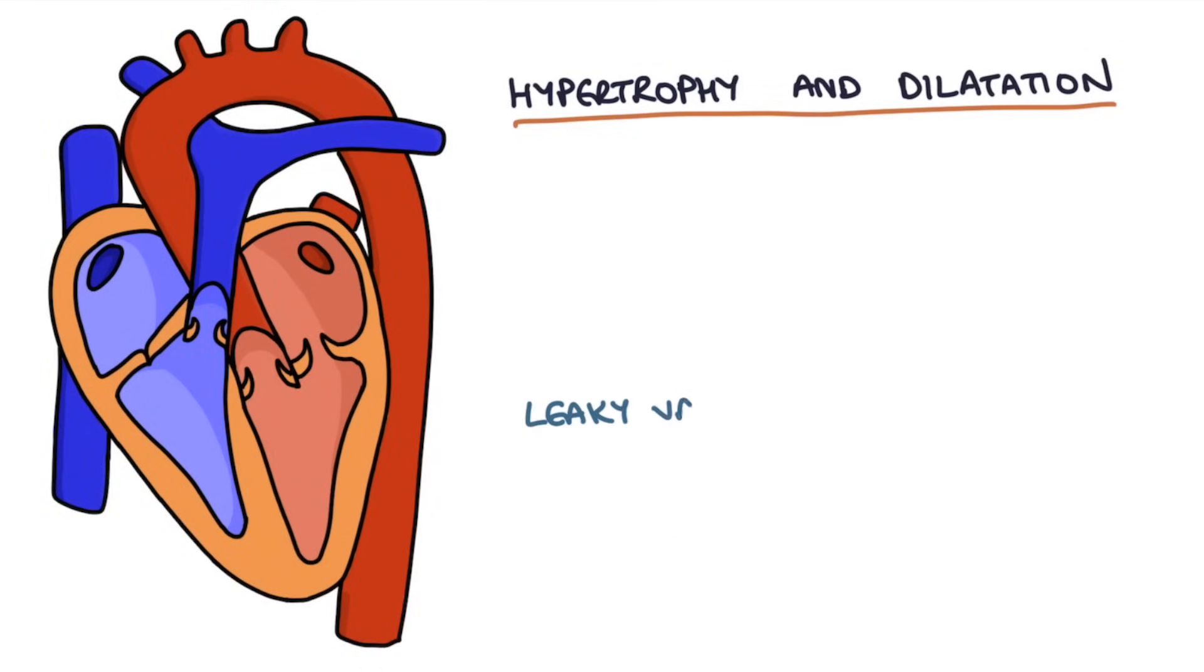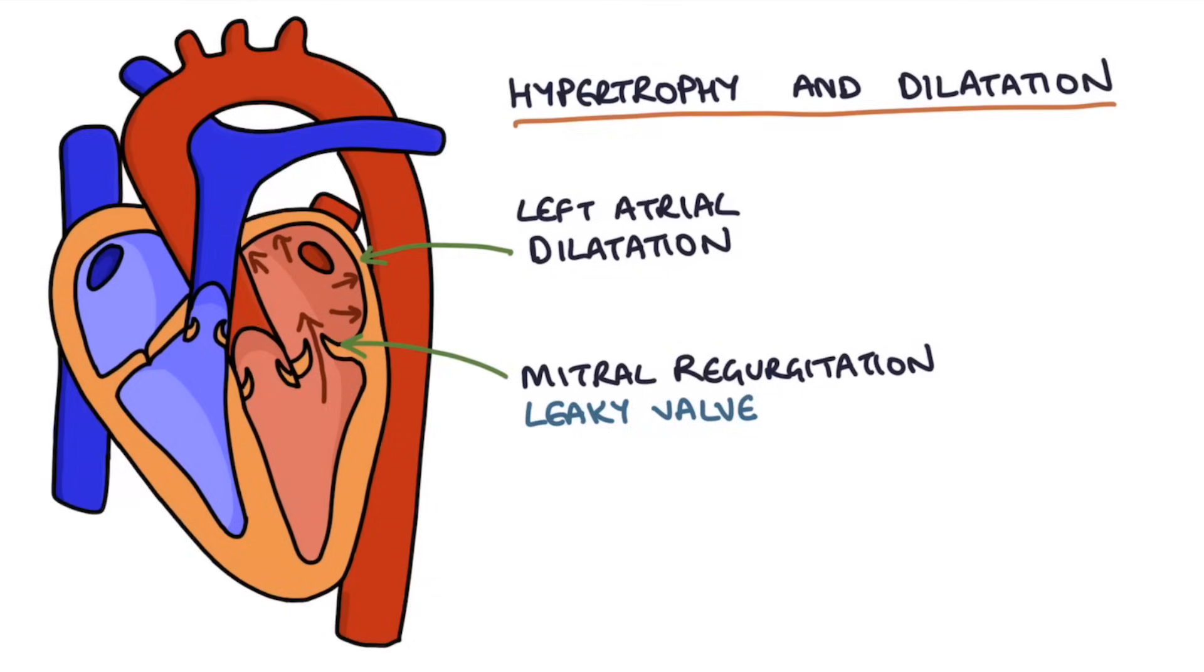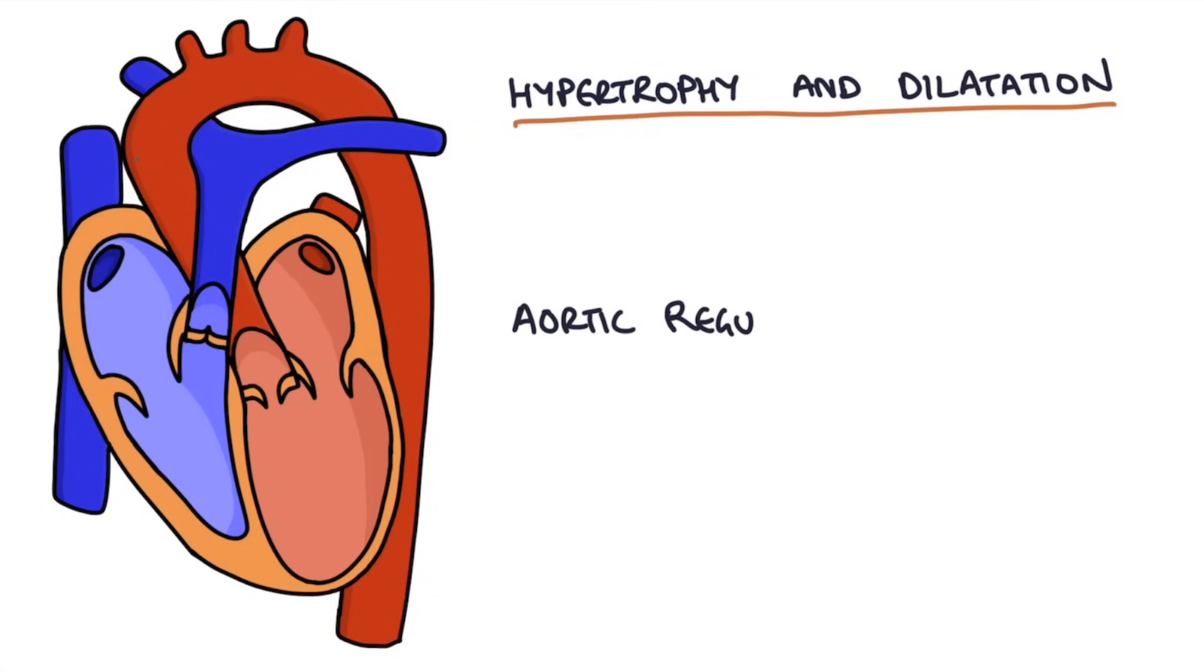When you have a leaky valve that allows blood to flow back into the chamber, it stretches the muscle and results in dilatation. When you have mitral regurgitation, there's blood flowing back through the mitral valve into the left atrium, so you end up with left atrial dilatation. When you have aortic regurgitation, there's blood flowing back from the aorta into the left ventricle, so you end up with left ventricular dilatation.